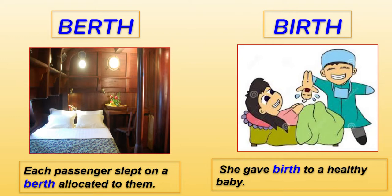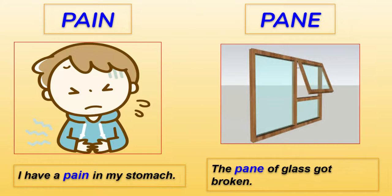B-E-R-T-H is a berth — when you travel by train and you get a particular place to sleep. 'Each passenger slept on a berth allocated to them.' B-I-R-T-H is birth — related to your birthday. 'She gave birth to a healthy baby.' So B-I-R-T-H is about being born or your birthday, and B-E-R-T-H is the sleeping place when you travel by train.